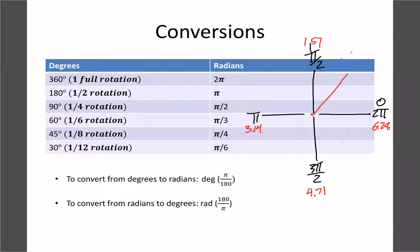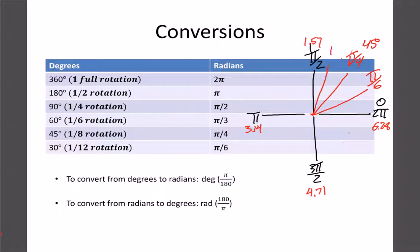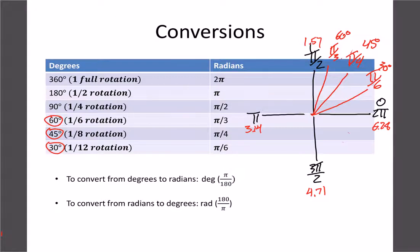Common radian fractions: a quarter of the way (45 degrees) is π/4, a third of the way to 90 degrees is π/6 (30 degrees), and two-thirds of the way is π/3 (60 degrees). So 60, 45, and 30 degrees correspond to π/3, π/4, and π/6 respectively — these are very common angles to memorize. For less common ones like π/5, you'd convert to find it's about 40 degrees.